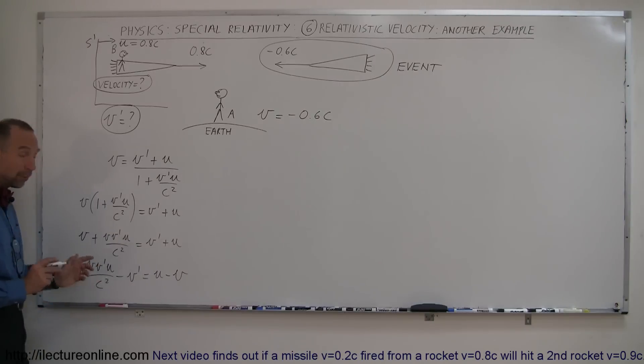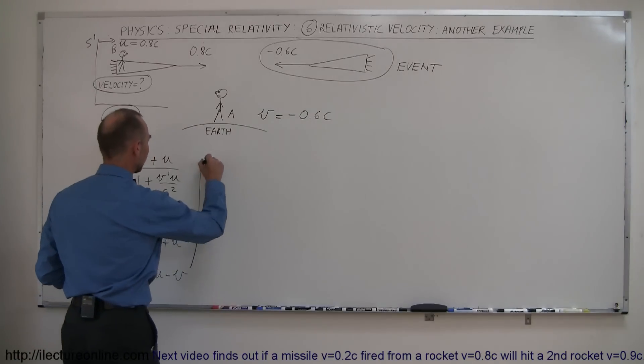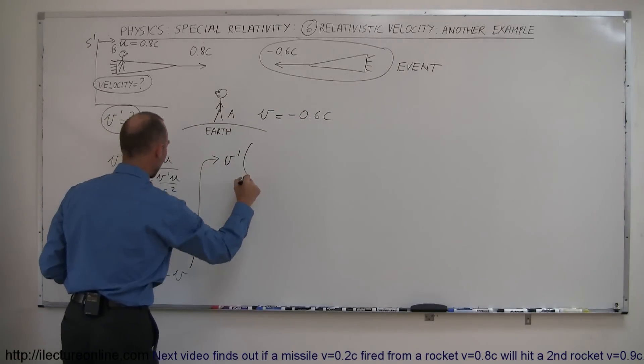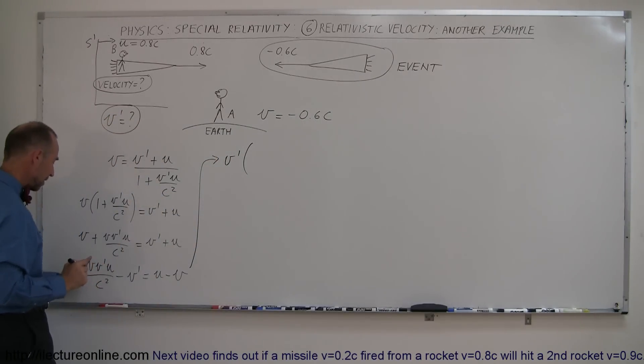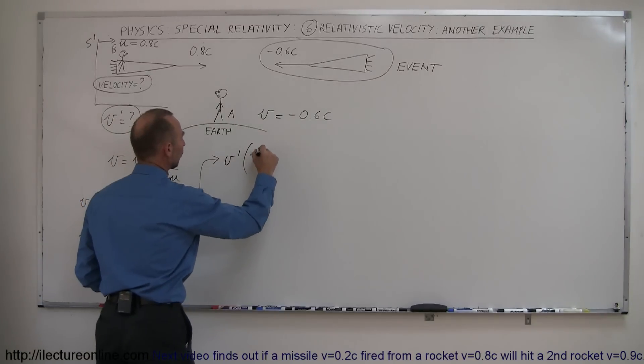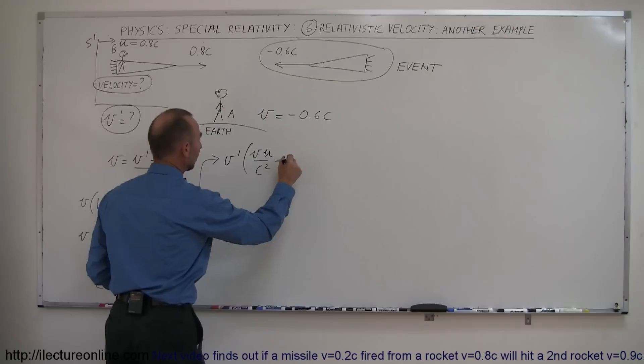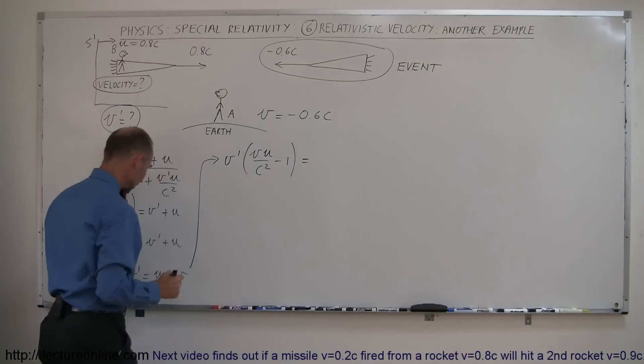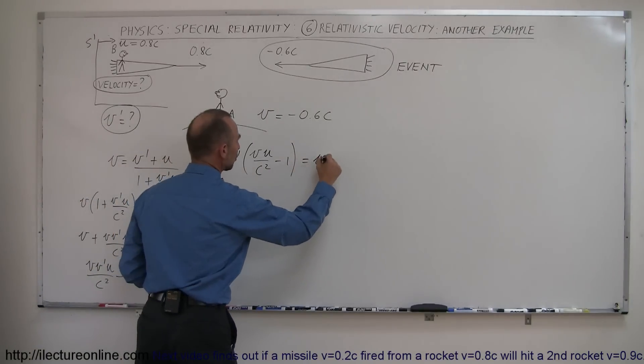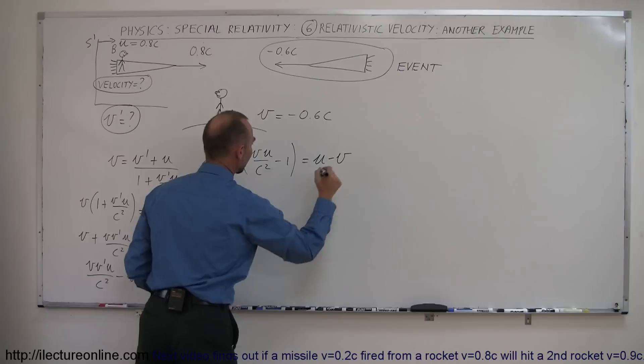All right. The next step, what we want to do here is factor out a V'. So if we do that, we get V' times, and let's see what's left here. We have a VU over C squared. So VU over C squared. We factor out a V' out of here, we get minus 1 equals, and of course on the right side we still have U and that would be minus V.